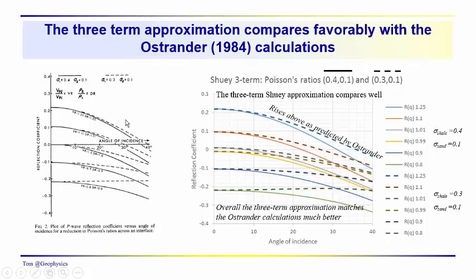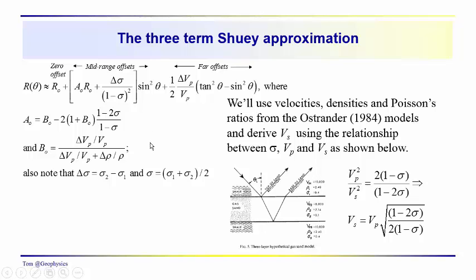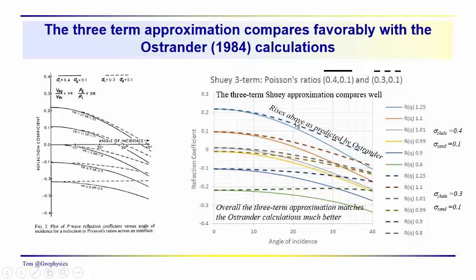Using the three-term approximation and looking at all three terms in the Shuey approximation, we now see that for the Poisson's ratios 0.3 and 0.1 in the dashed lines, we get pretty good agreement — it rises above as predicted by Ostrander. For the values 0.4 and 0.1 in the solid lines, it also comes in as it should. Overall we see a pretty good match for these combinations of Poisson's ratio, plus a couple of extra terms added to see how results vary as we approach zero.